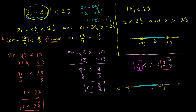Similarly, r=3 should not work: 2×3 is 6, minus 3¼ is 2¾. The absolute value is 2¾, which is still bigger than 2½, so it won't work. These test points validate the solution we got.